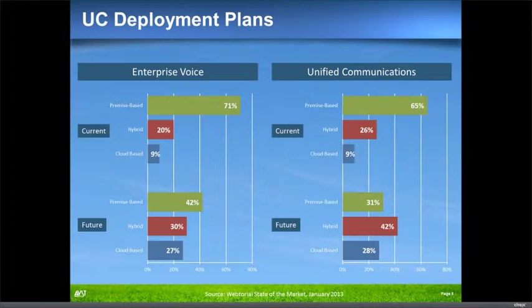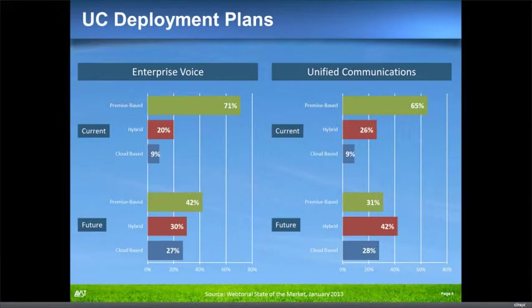That same group was asked about their general unified communications solutions — web conferencing, groupware, all that functionality. The state of the union today is very similar: 65% completely on site, 26% hybrid, and 9% already out in the cloud. When asked about their future, it's viewed as more of a hybrid future. From a UC perspective, they're more likely to still want to keep a larger percentage of application functionality within their own firewalls.